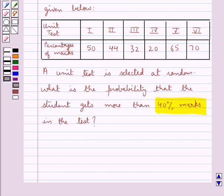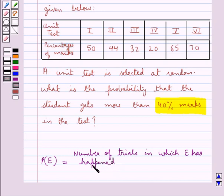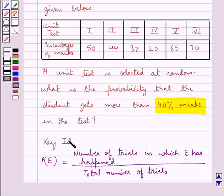Before we move on to the solution, let's recall the formula to find the probability of an event E. This is equal to the number of trials in which the event E has happened upon the total number of trials. This is the key idea to be used for this question.